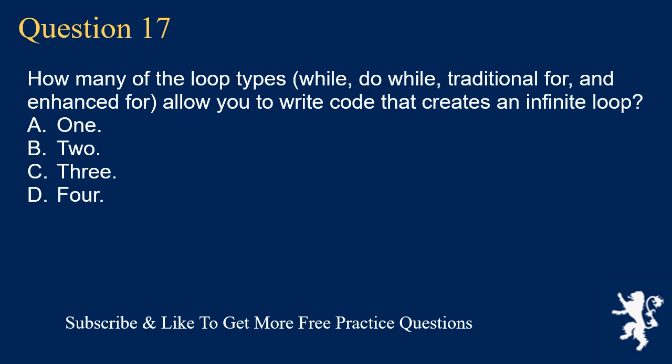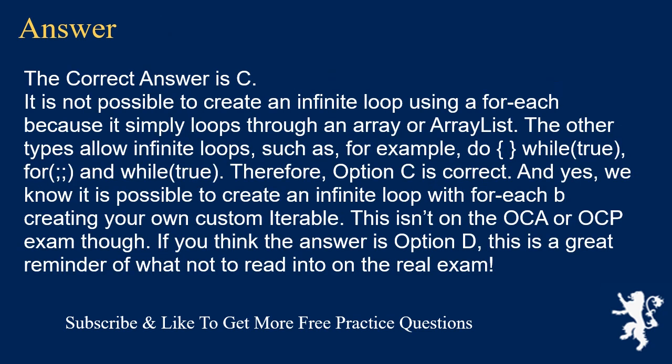Question 17. How many of the loop types — while, do-while, traditional for, and enhanced for — allow you to write code that creates an infinite loop? A. 1. B. 2. C. 3. D. 4. The correct answer is C. It is not possible to create an infinite loop using a for-each loop because it simply loops through an array or list. The other three types allow infinite loops, such as do { } while (true), for (;;), and while (true). Therefore, option C is correct. Note: it is technically possible to create an infinite loop with for-each by creating a custom iterable, but this is not on the OCA or OCP exam.